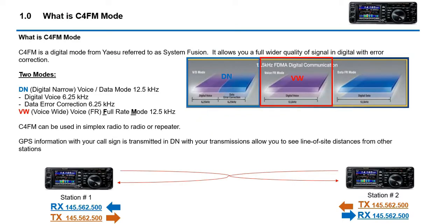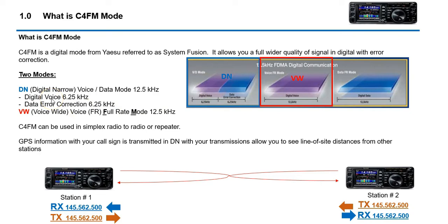C4FM is a digital mode — Yaesu System Fusion — where they have made a hybrid communication protocol that allows them to do FM and digital with automatic mode select and so forth. It's a pretty cool mode. For the most part we're going to be using Digital Narrow, which contains your data for your voice and also location information and so forth.